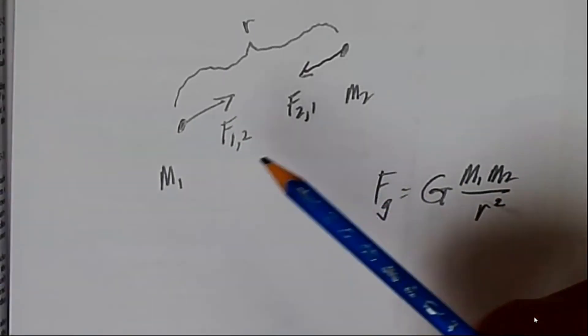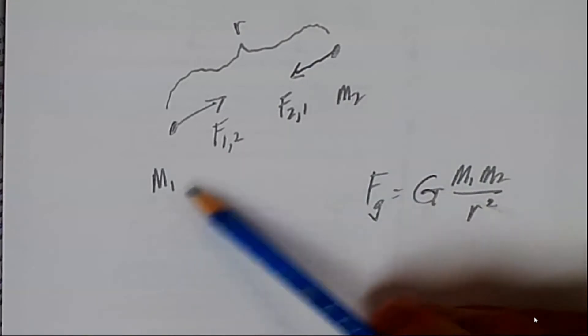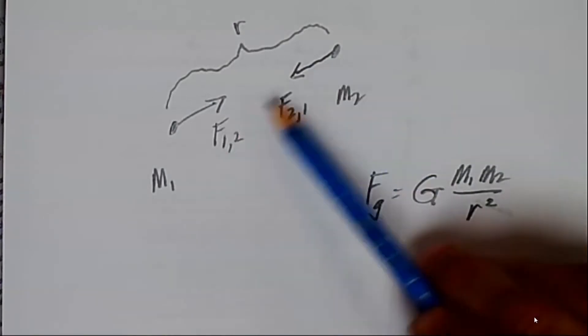Newton's law of universal gravitation has taught us that two particles with mass m1 and m2 have an attraction to each other.